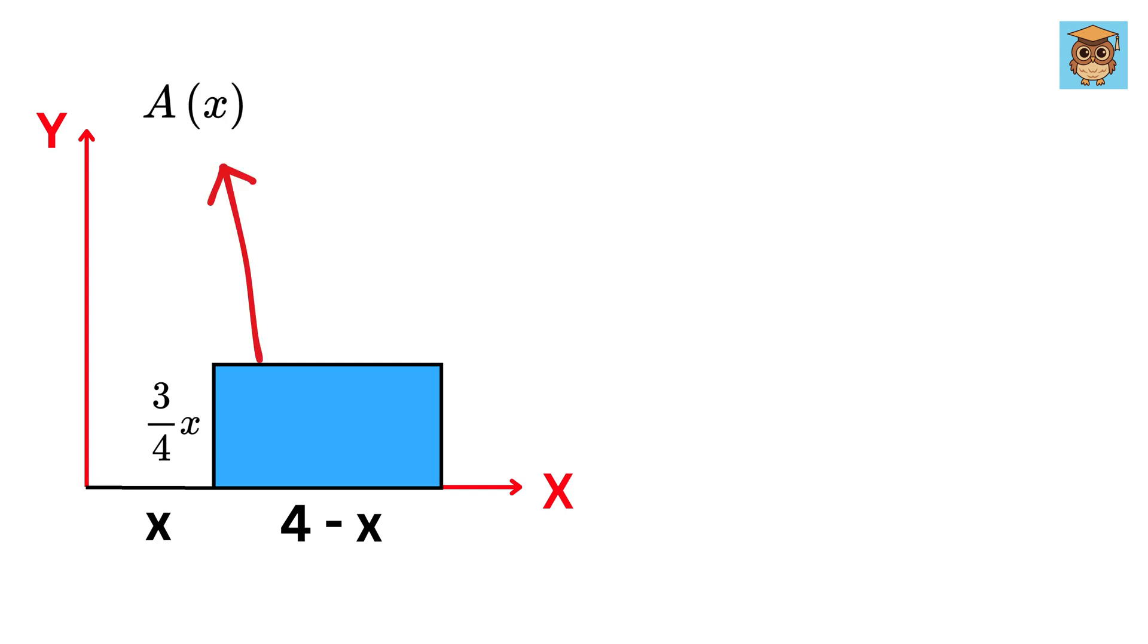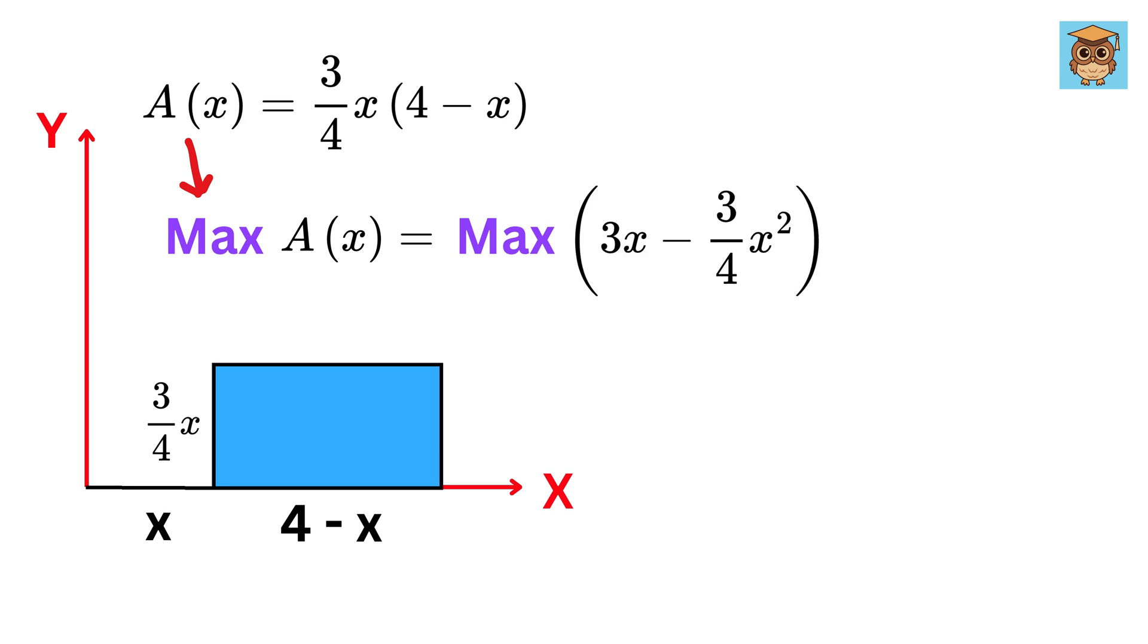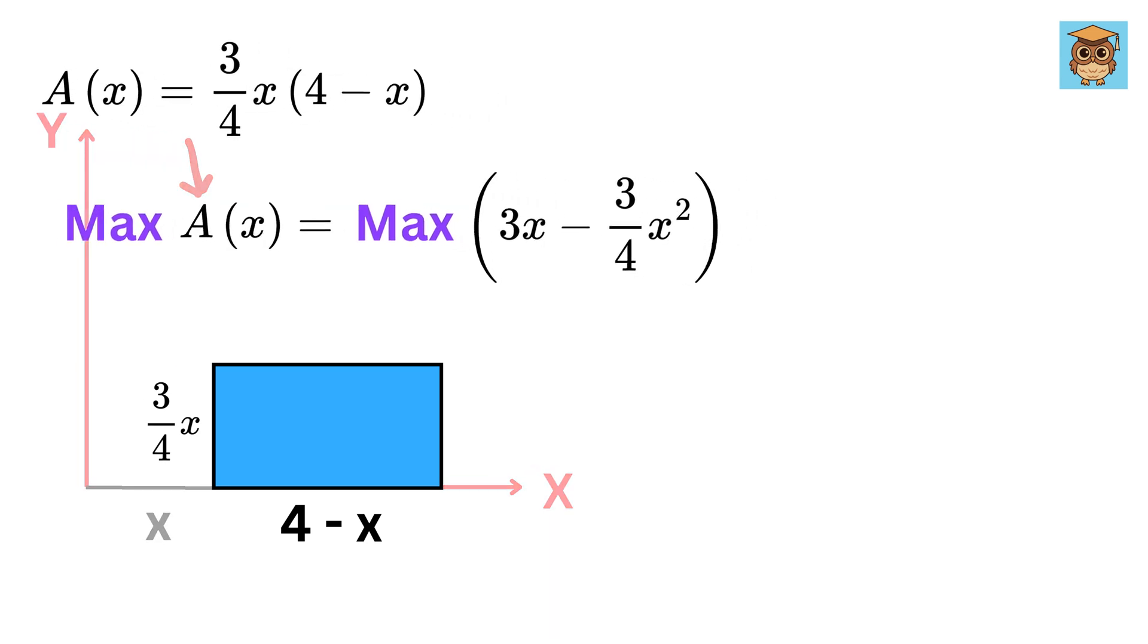Therefore, the area of this rectangle will be 4 minus x times 3 over 4 x. And our job is to find the maximum value of this area, or A of x. It will become 3x minus 3 over 4 x squared.